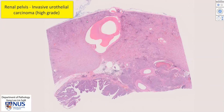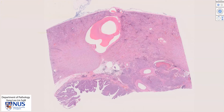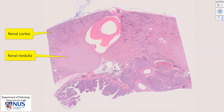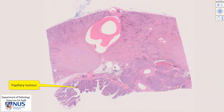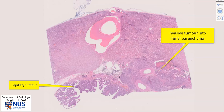Here we have a section of the kidney. This is the region of the renal cortex, here is the capsule of the kidney, this is one of the pyramids in the renal medulla, and this is the renal sinus fat. This region is the renal pelvis, which is lined usually by urothelium. Here is a papillary tumor within the renal pelvis, and in this area we have an invasive tumor that is invading into the renal sinus fat as well as into the renal parenchyma itself.